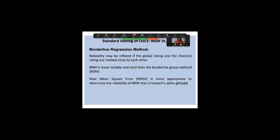We recommend never calculating the checklist score before giving your global rating, because once you calculate it, the natural tendency is to align your global rating close to it. However, some students may not be safe for community practice — their checklist score may be inflated by procedural steps like introducing themselves, explaining the procedure, or thanking the patient. Root mean square error gives a true reflection of performance and also indicates whether global rating has been done well.